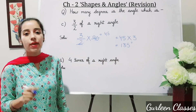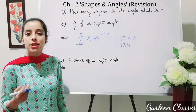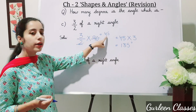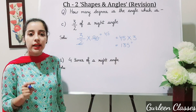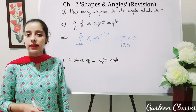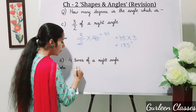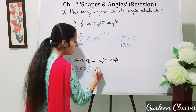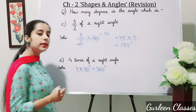Students, now you all know fractions, so this is more easy for you. You simply have to multiply the numerator 3 and 45, and the answer is 135 degrees. Now part D: 4 times of a right angle. 4 times means 4 into 90 degrees, which equals 360 degrees.